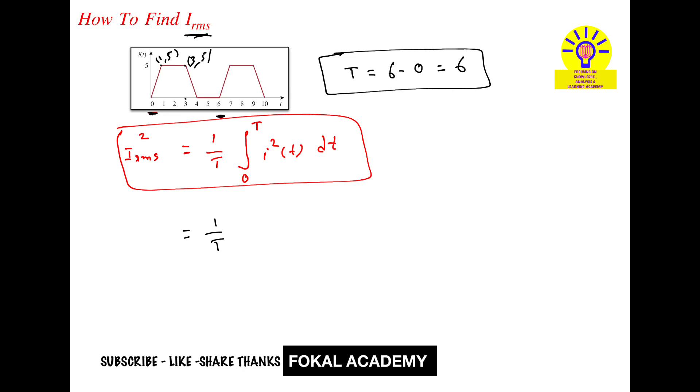Integral of 0 to 6, we want i square of t dt. It can be written as 1 by T, integral of 0 to 1, i square of t dt plus integral of 1 to 3, one equation is there, plus integral 3 to 4, one equation is there. 4 to 6 is 0, there is no change. Plus 0 is nothing but 0 only. There is no effect. Next here, 1 by T, integral of 0 to 1.